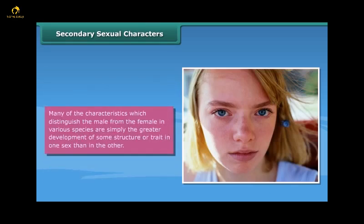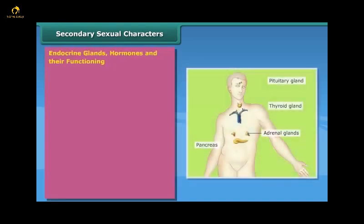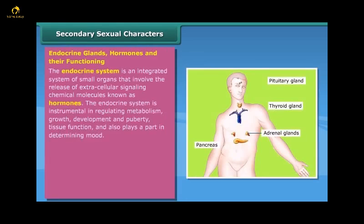Many of the characteristics which distinguish the male from the female in various species are simply the greater development of some structure or trait in one sex than in the other. The endocrine system is an integrated system of small organs that involve the release of extracellular signaling chemical molecules known as hormones. The endocrine system is instrumental in regulating metabolism, growth, development and puberty.